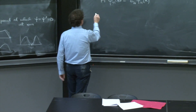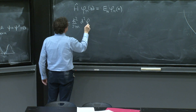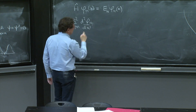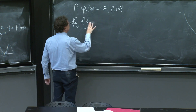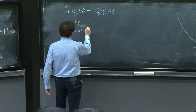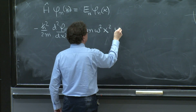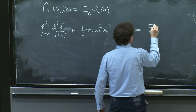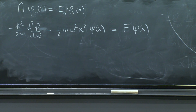So this is what we want to solve. We have: minus h_bar squared over 2m times d²phi/dx² plus one-half m omega squared x squared phi(x) equals E phi(x). This is the equation we want to solve.